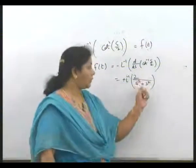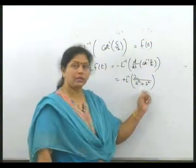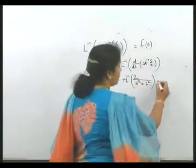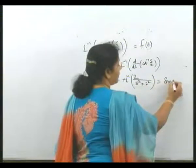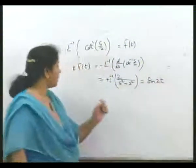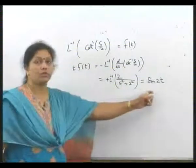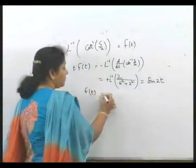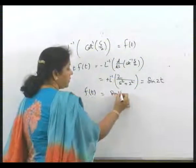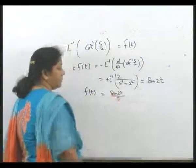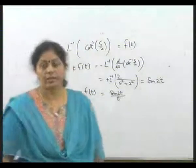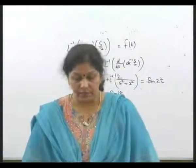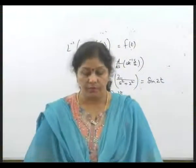We recognize the form A upon s squared plus A squared, whose L inverse is simply sin(At). So L inverse of 2 upon s squared plus 4 equals sin(2t). This means t f(t) equals sin(2t), so f(t) simply comes out to be sin(2t) divided by t. In this manner, using this property, we are able to find out the function.